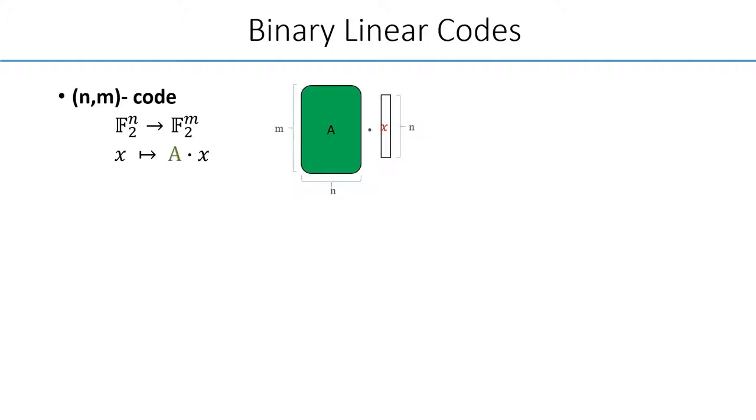First of all, Binary Linear Codes. Linear means that we encode a message x by multiplying with an n by m matrix, called the generator matrix. Binary means it's over GF2, namely every entry of the matrix or vector is either 0 or 1. And m is the length of the codeword.